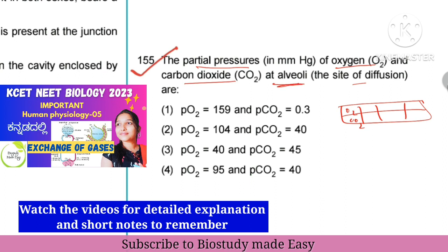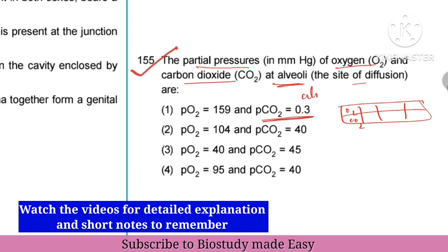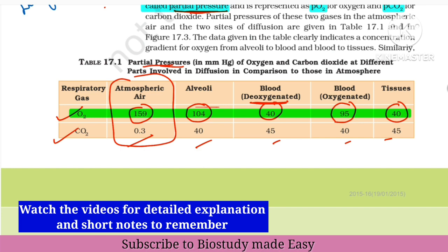Next question on partial pressure values. pCO2 is 0.3 mmHg in atmosphere. Alveolar oxygen is located in one option. Alveolar CO2 is 104 mmHg and atmospheric carbon dioxide is 40 mmHg — checking the chart, 103 is noted for one value. The right option is option two.